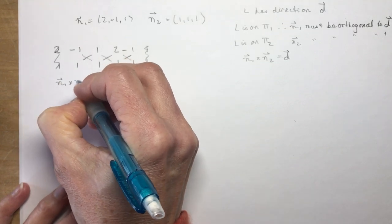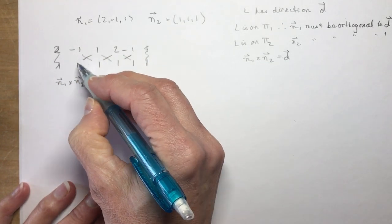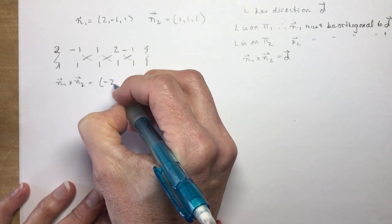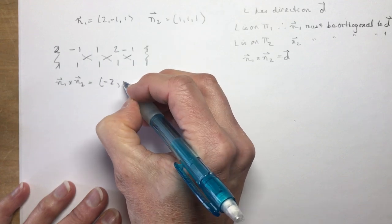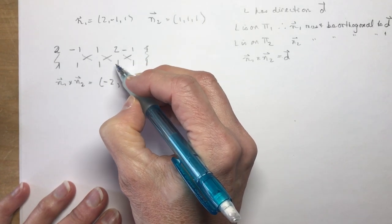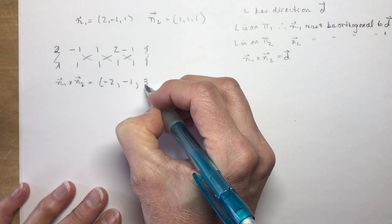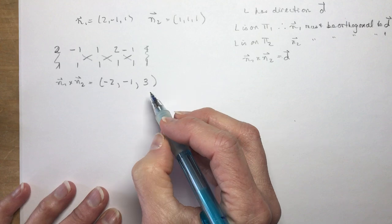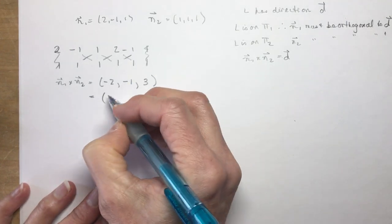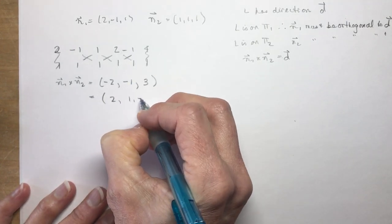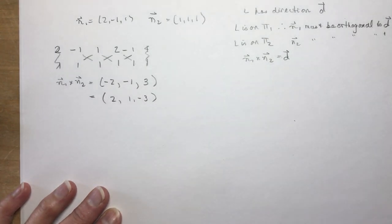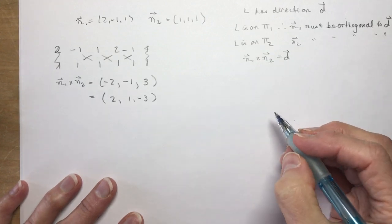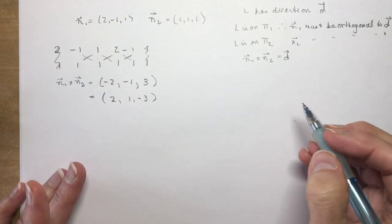Computing n₁ × n₂: multiply on the way down and subtract on the way up. The first term: -1 - 1 = -2. The second term: 1 - 2 = -1. The third term: 2 + 1 = 3. So the direction vector is (-2, -1, 3), or equivalently (2, 1, -3) by multiplying by -1.